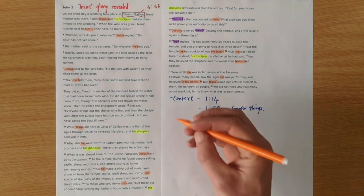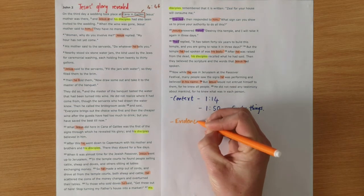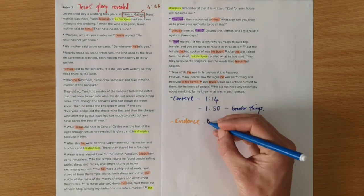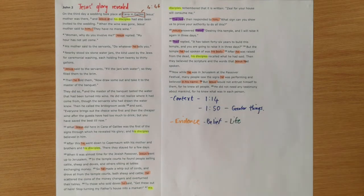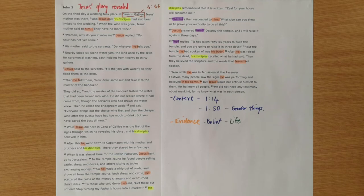Remember too, that in John we've got evidence, belief and life, which are key themes that we can trace right through this whole story. And again, the evidence starts to build in this section. Evidence which is calling us to believe in Jesus, which we'll also see. And that belief in Jesus leads to life through His name, as the key verses in John tell us. John 20, verse 30 to 31.